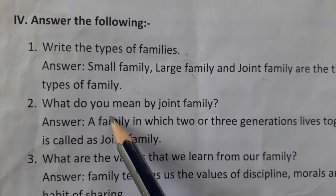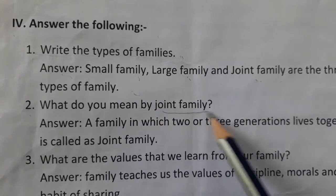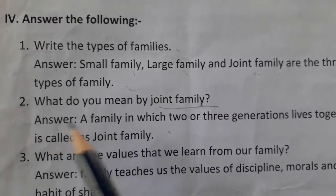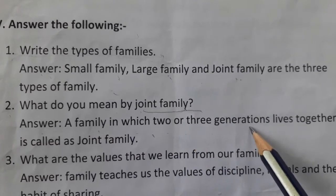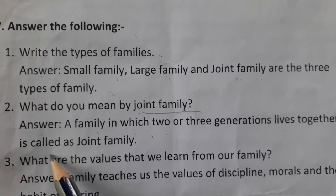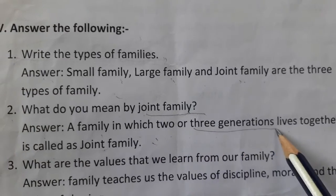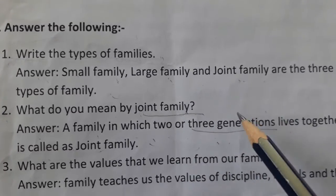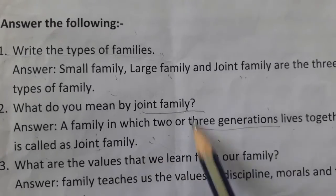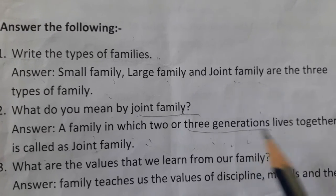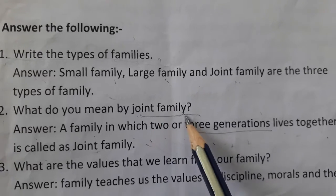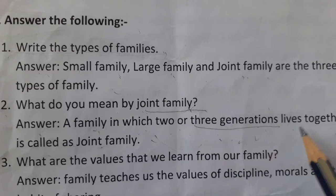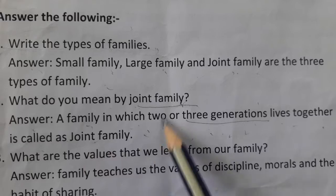Second question: what do you mean by joint family? A family in which two or three generations live together is called a joint family. Three generations means your grandfather, your father, and yourself living together. If three generations of a family live together, that family is called a joint family.